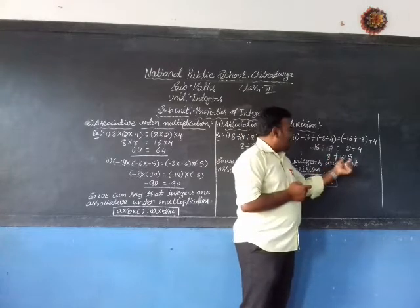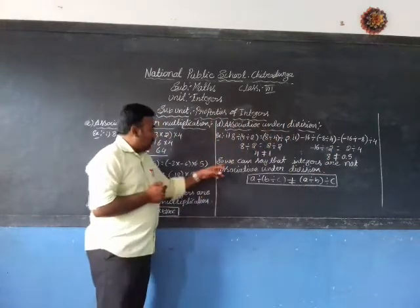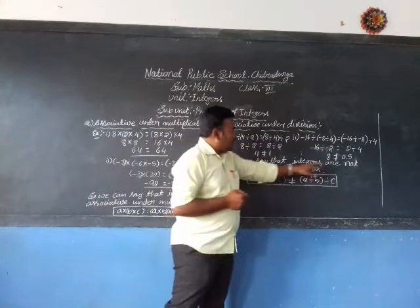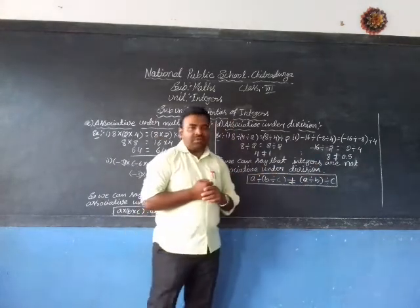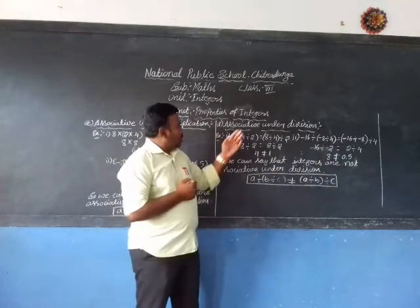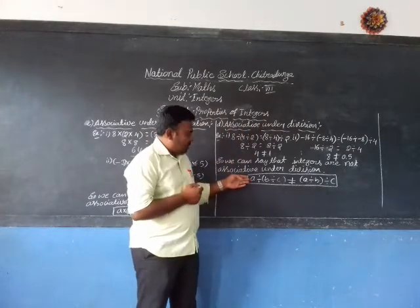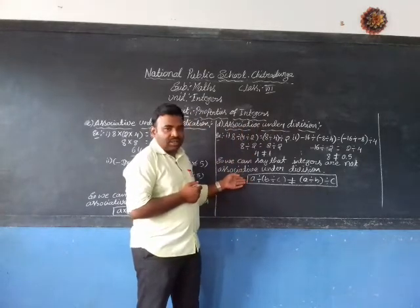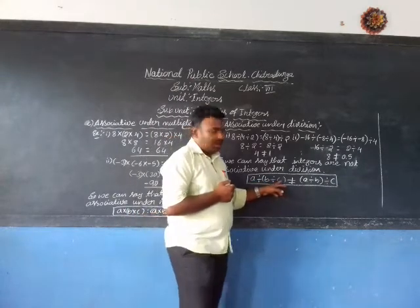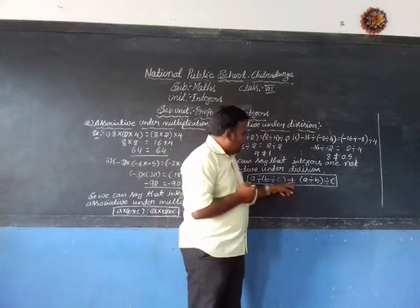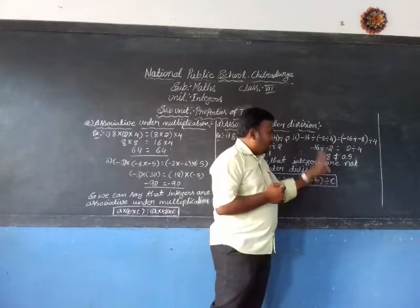Once again the results are not the same, so integers are not associative under division. This is represented as: A ÷ (B ÷ C) ≠ (A ÷ B) ÷ C.